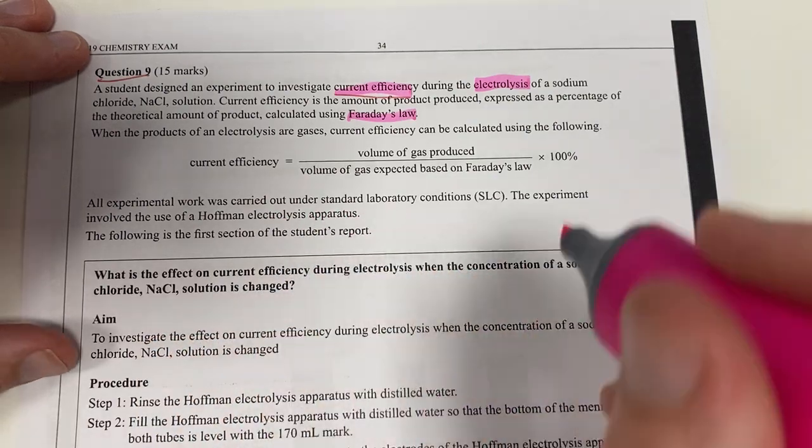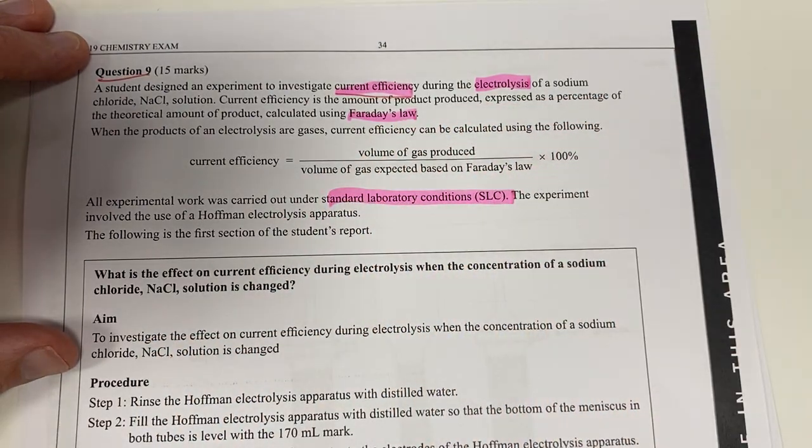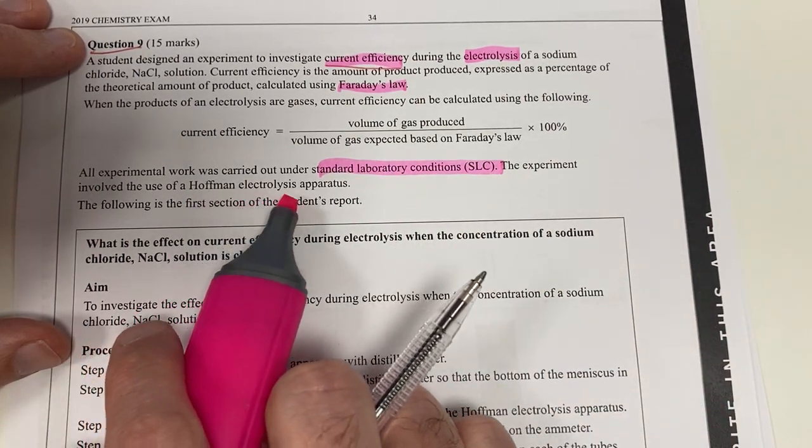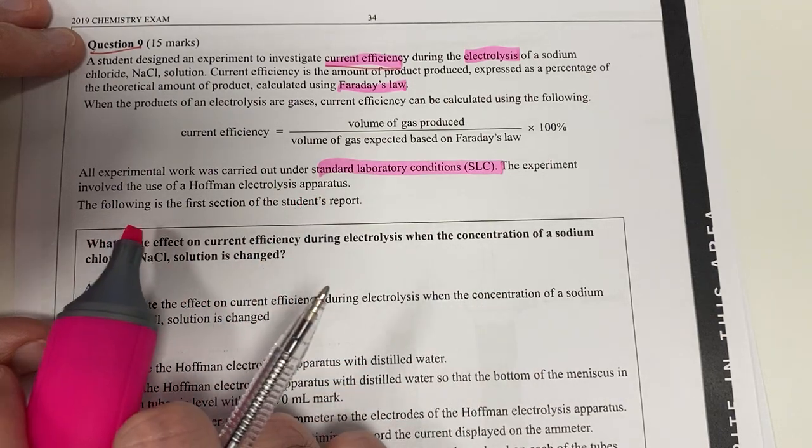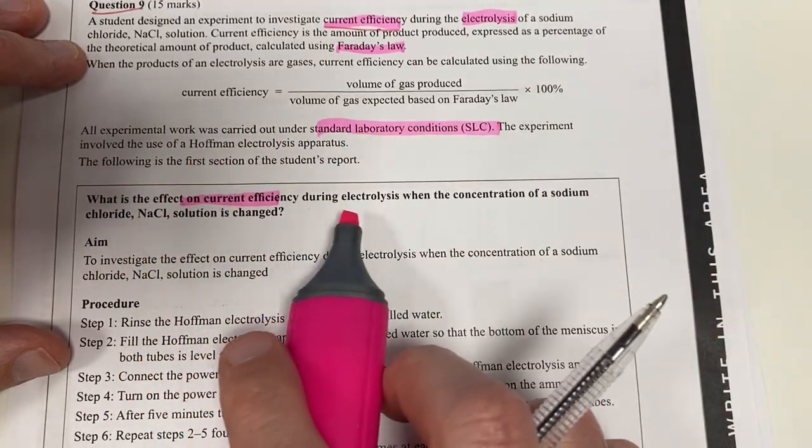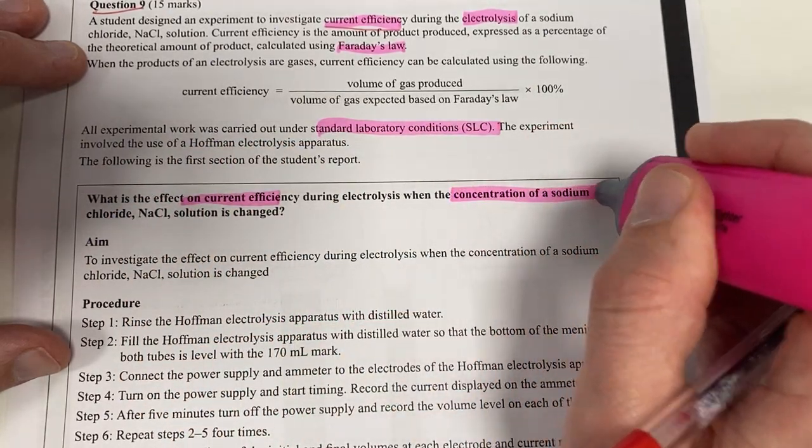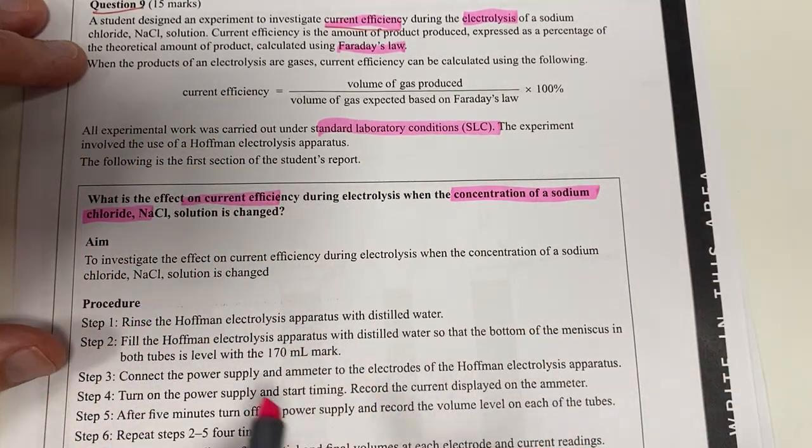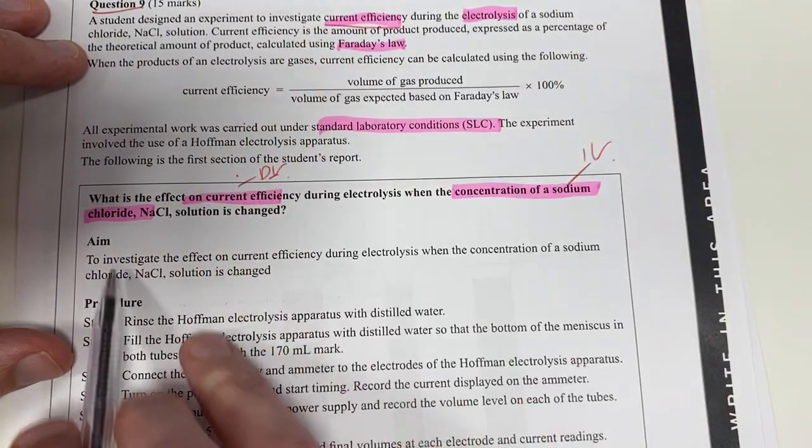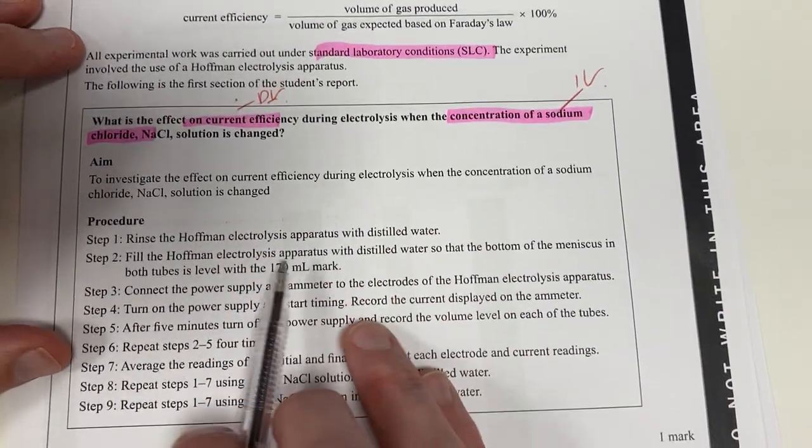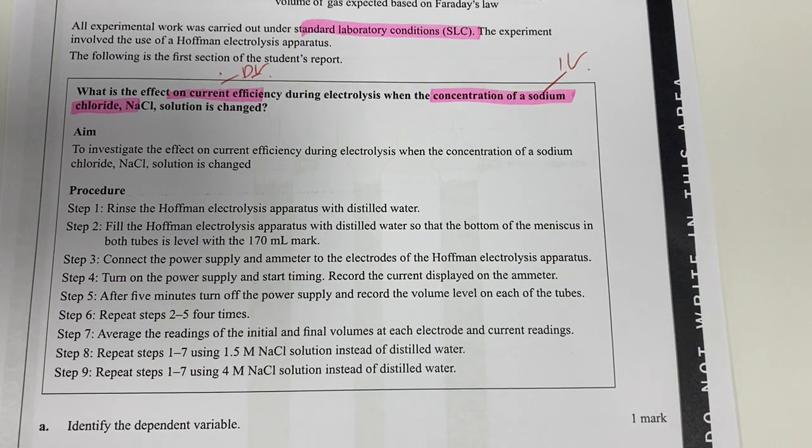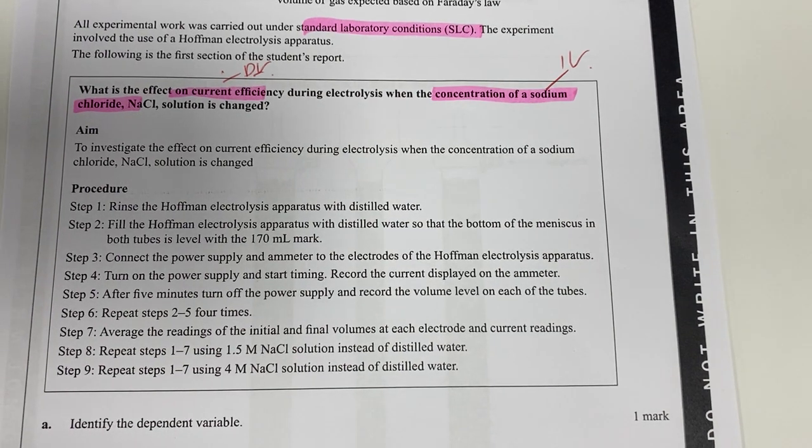All experimental work carried out under standard laboratory conditions (SLC), so we can use the molar volume if needed. The experiment used a Hoffman electrolysis apparatus. What is the effect on current efficiency when we change the concentration of sodium chloride? This here is our independent variable, and current efficiency is our dependent variable. The aim is pretty much the same as this, and here's our procedure.